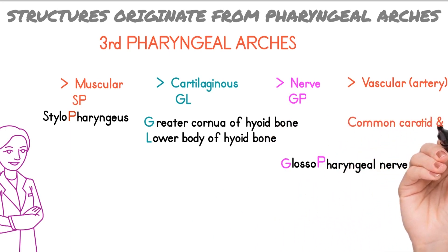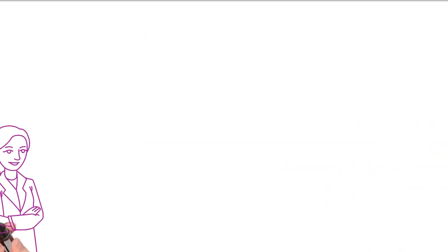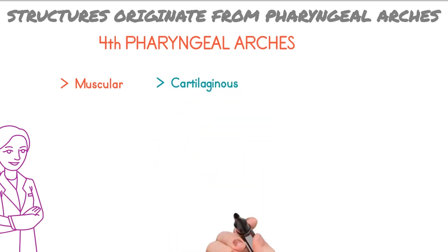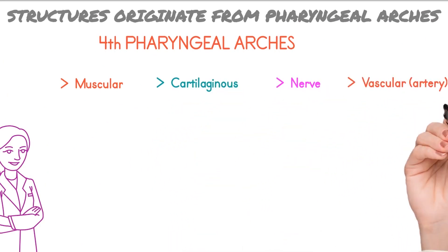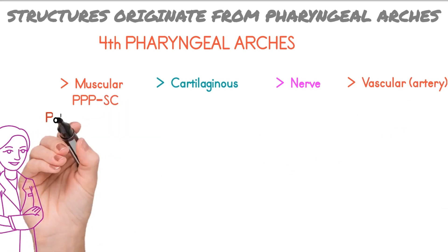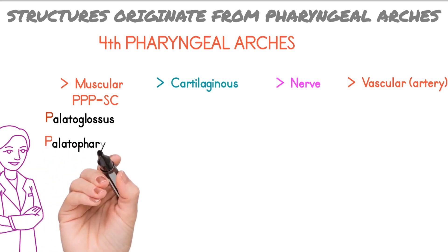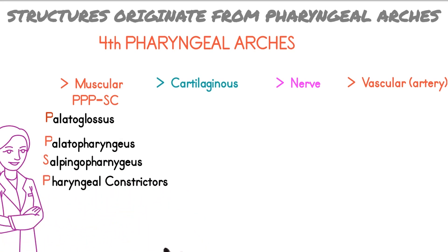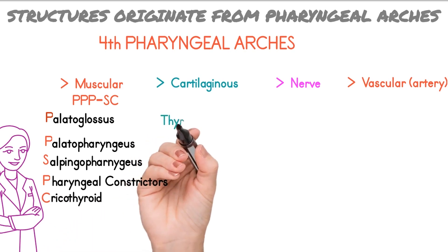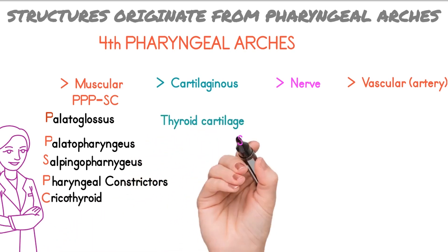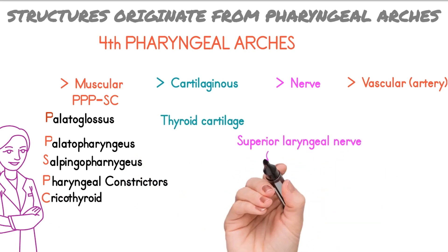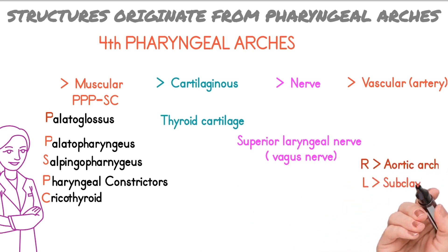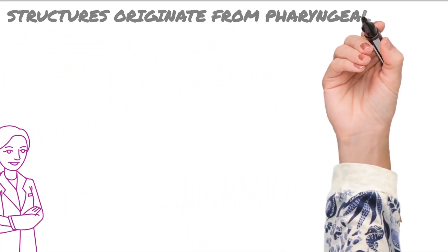Now the structures formed from the fourth pharyngeal arch: the muscular component has the mnemonic 'triple P-S-C.' P stands for palatoglossus muscle, palatopharyngeus, and all constrictor muscles of the pharynx. S stands for salpingopharyngeus muscle, and C stands for cricothyroid muscle. The cartilaginous component forms only the thyroid cartilage. Nerve supply is from the tenth cranial nerve branch, which is the superior laryngeal nerve. Blood supply on the right side is from the aortic arch and on the left side from the subclavian artery.